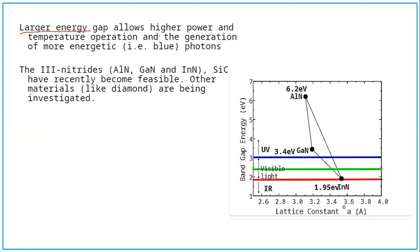The advantage of a larger band gap is that a larger energy gap allows higher power and temperature operation, and the generation of more energetic photons. Apart from silicon carbide and gallium nitride, aluminium nitride and indium nitride have recently become feasible. Even diamond is an example of a wide band gap material. A comparison chart is provided showing the difference in band energy gap for gallium nitride, indium nitride, and aluminium nitride, and how more photons are generated.